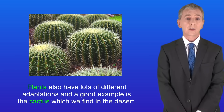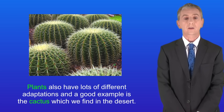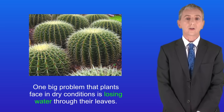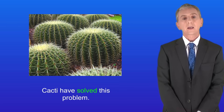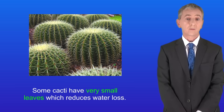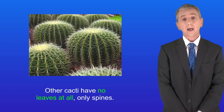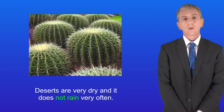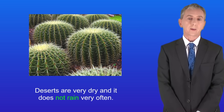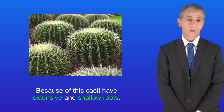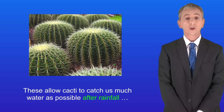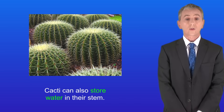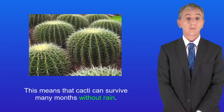Plants also have lots of different adaptations, and a good example is the cactus which we find in the desert. Cacti are very well adapted to living in dry conditions. One big problem that plants face in dry conditions is losing water through their leaves. Some cacti have very small leaves which reduces water loss; other cacti have no leaves at all, only spines, and these spines also protect the cactus from animals. Because deserts are very dry and it doesn't rain very often, cacti have extensive and shallow roots. These allow cacti to catch as much water as possible after rainfall, before the water evaporates or sinks into the ground. Cacti can also store water in their stem, which means that cacti can survive many months without rain.